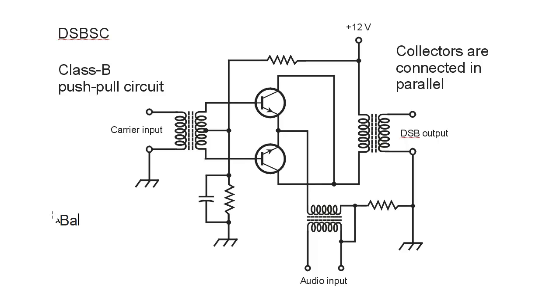Balanced modulator because it tends to balance out the carrier wave in the output part of the circuit. And this type of circuit forms the heart of a single sideband transmitter.